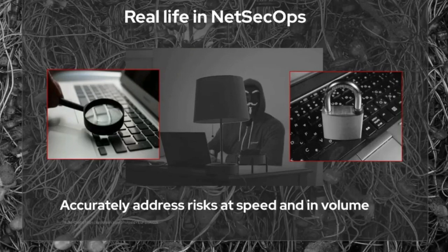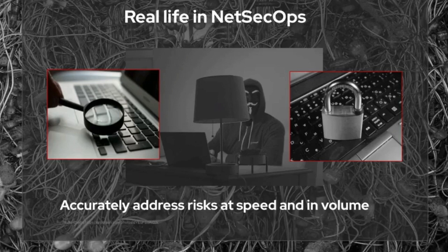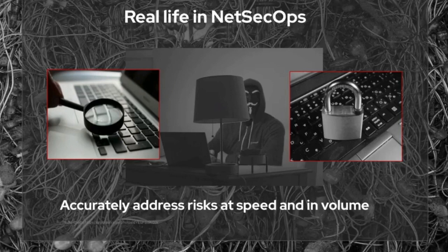It goes without saying that attacks on our networks are increasing in sophistication and complexity day by day. On the other hand, we also observed that a lot of famous breaches were caused because of a lack of security hygiene, namely human error. For instance, researchers have found almost 85,000 unique Google API keys just by looking at public version control systems. Another example is one of the famous breaches at a network management company, which had an easy password created by an intern for testing purposes that led to very severe breaches at highly secure networks.